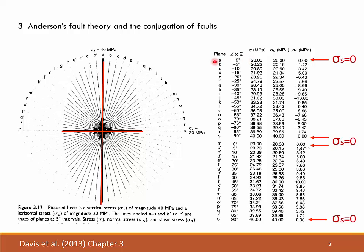We also find plane A, which is parallel to the maximum principal stress of 40 MPa. Onto that plane there are also no shear stresses acting — only the 20 MPa of the smaller principal stress vector. In summary, in any stress field with principal stresses (which is essentially every non-hydrostatic stress field), planes oriented perpendicular to either the maximum or minimum stress will show zero shear stress and only normal stress.